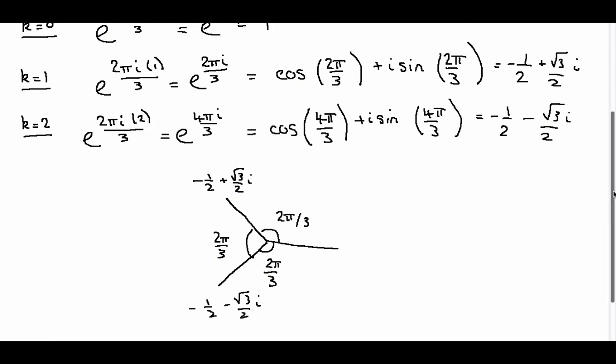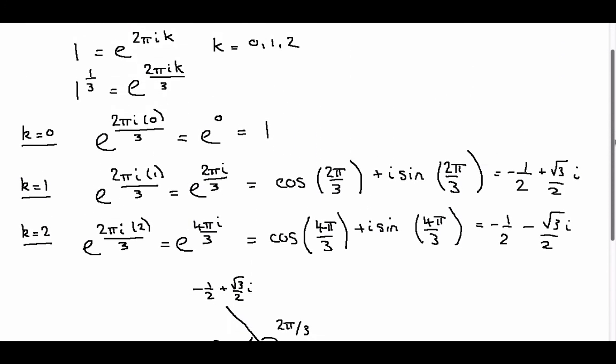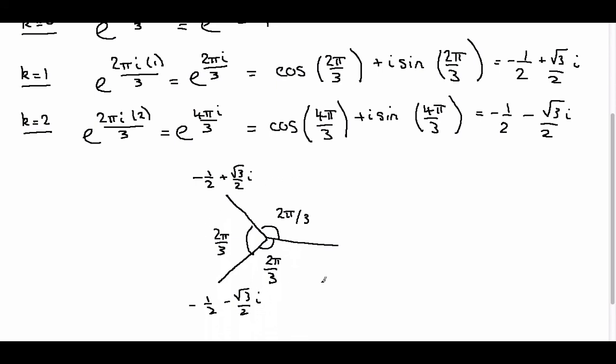So we now have found our three solutions, and all three solutions lie, in this example, on a unit circle, and the angle between each solution is 2 pi over 3.